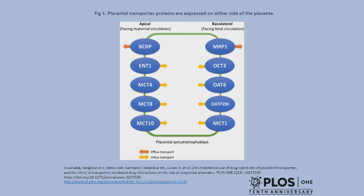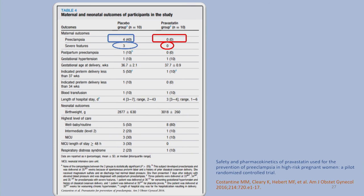In addition to diffusion, there are series of transporters responsible for efflux — MRP1 and BCRP are efflux transporters — and other transferases that are influx transporters, actively pushing drug toward the fetal compartment or back to the maternal compartment. This has become very helpful in setting up clinical trials to select drugs that will either cross the placenta to treat the fetus, or remain in the maternal compartment.